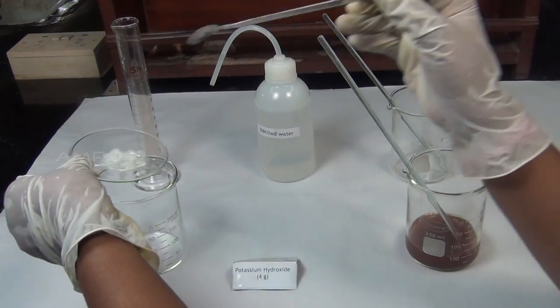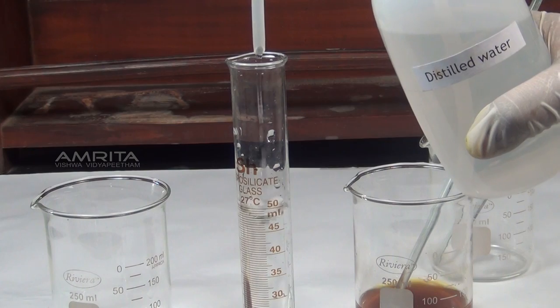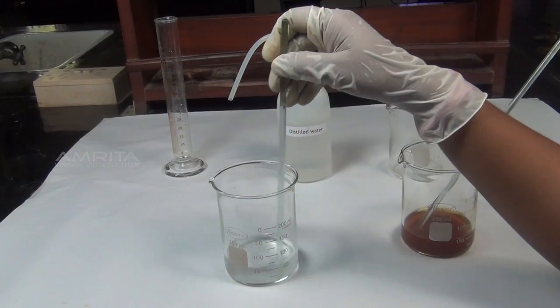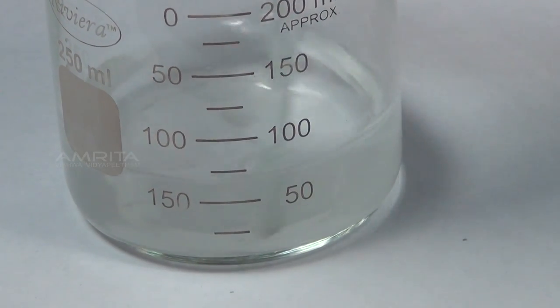In another beaker, take 4 g potassium hydroxide. Pour another 50 ml distilled water into this beaker. Stir the solution using a glass rod to dissolve potassium hydroxide.